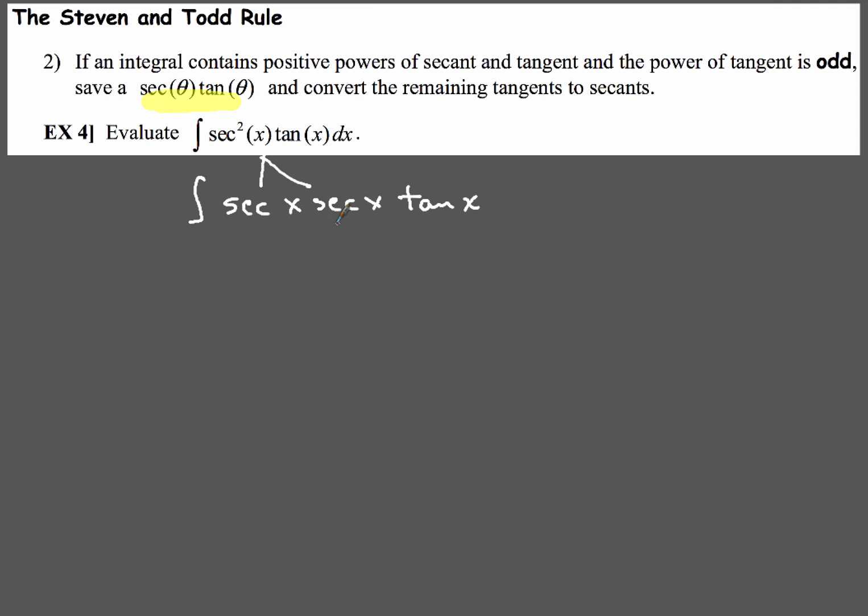Now by doing that, take a look at what we did. We've got a secant x tangent x right there. So when we have both of those two pieces, that's going to allow us to use this piece right here. Now in this case...